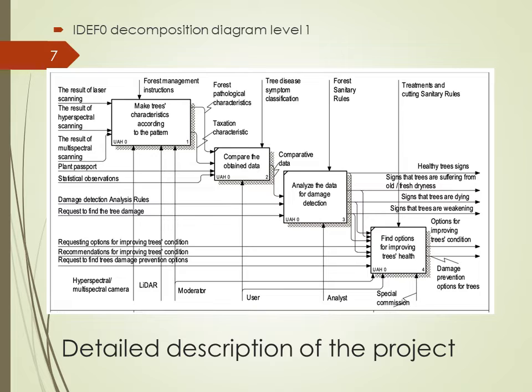This is the decomposition of the previous diagram. It has four activities. First, the system makes trees' pathological and taxation characteristics according to the pattern. Then it compares the obtained data from the user and creates characteristics. The system analyzes this comparative data for damage detection and, as a result, gives the state of the trees. Finally, it finds options for improving tree health.